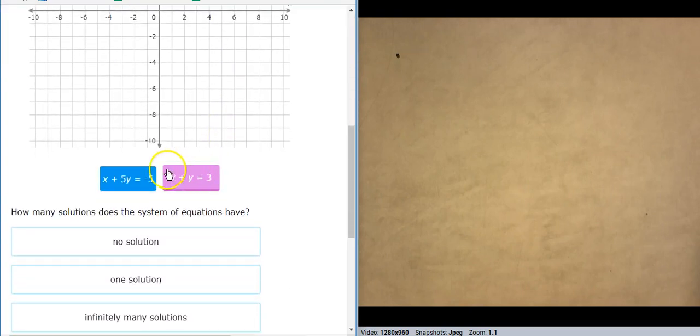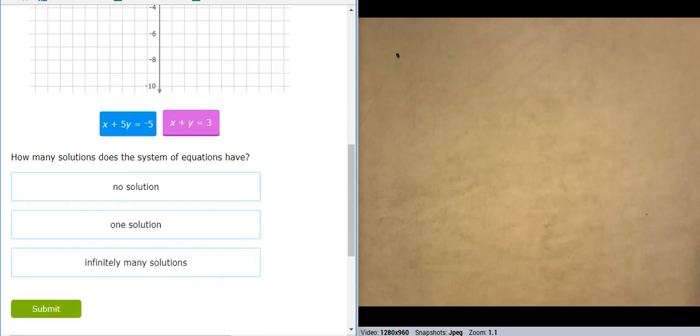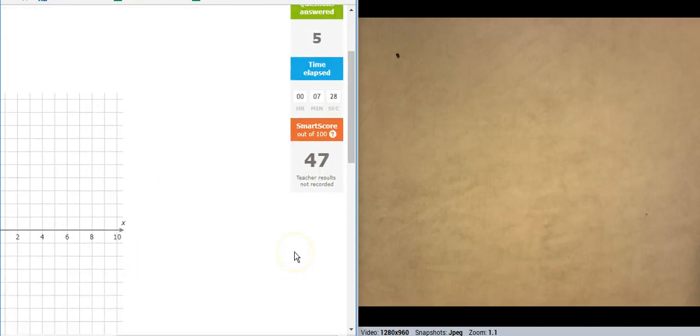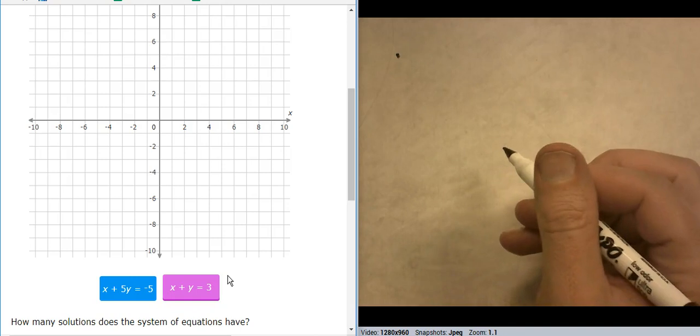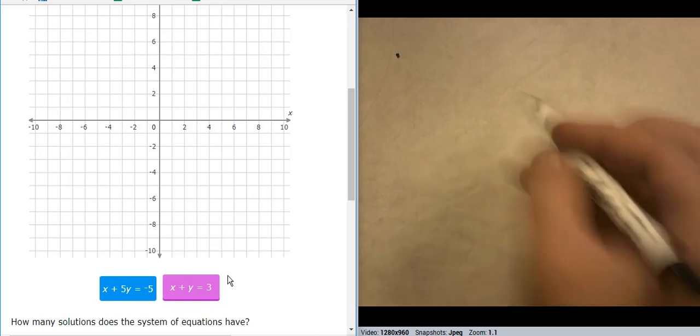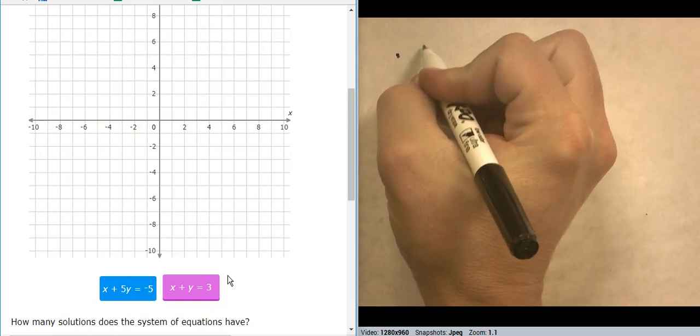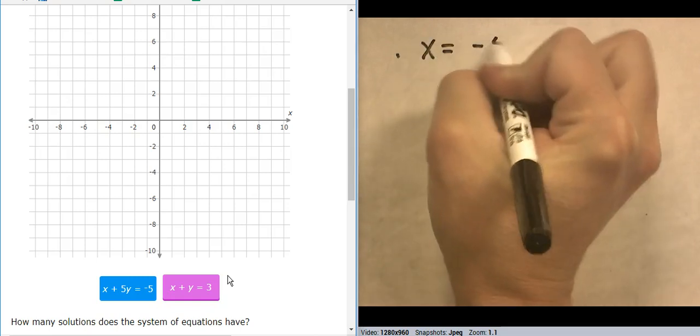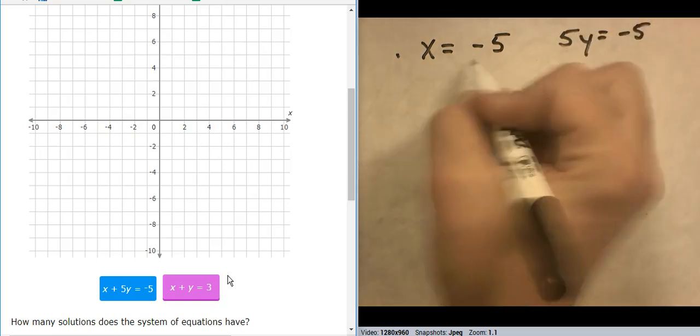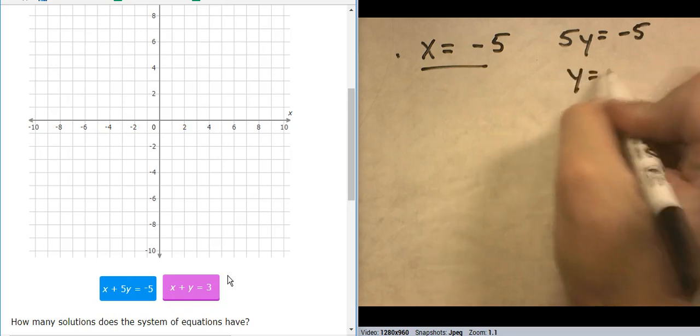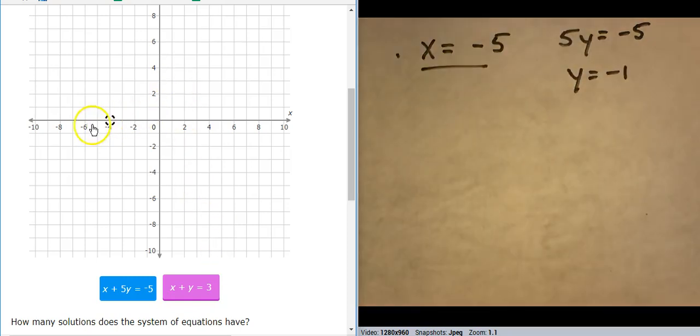Now we're getting some interesting ones. So we have some that are in standard form. So I have a couple options with standard form. I can do the mini-equation method, or I can do move the x divided by the y. I'm going to do mini-equations on this first one. So I have x equals negative five, and five y equals negative five. So with x, x equals negative five, and y equals negative one. So there's my first line, x equals negative five, y equals negative one. First line.